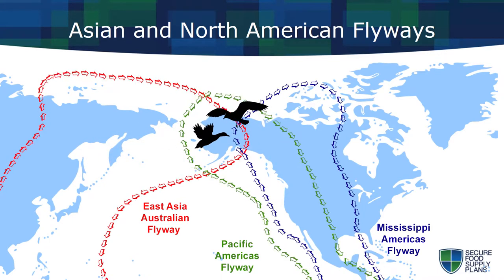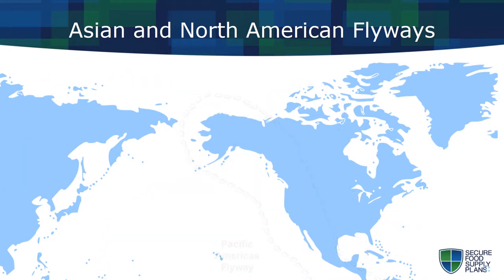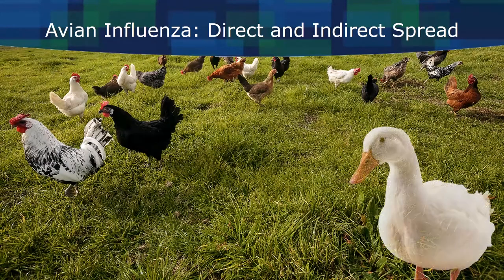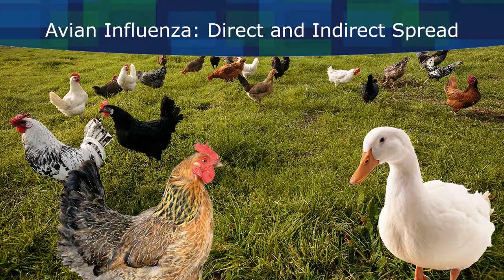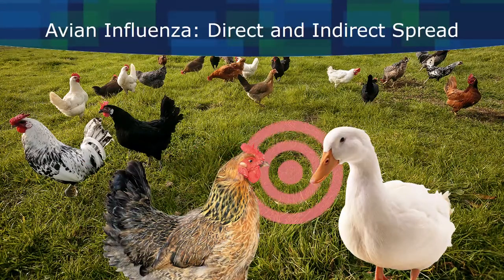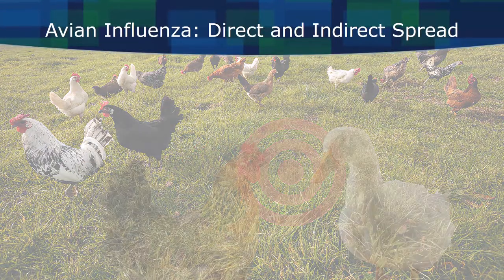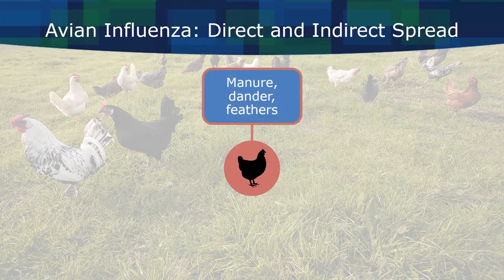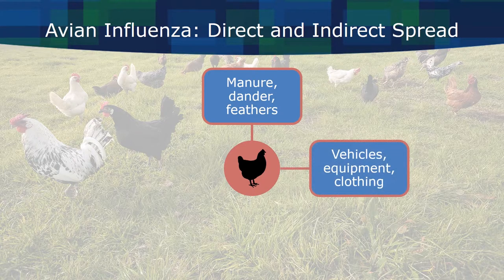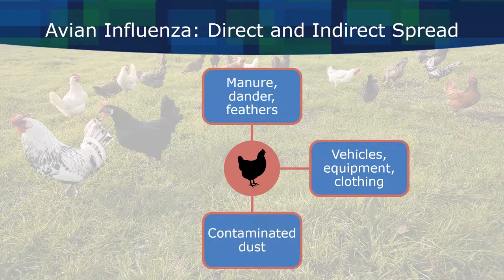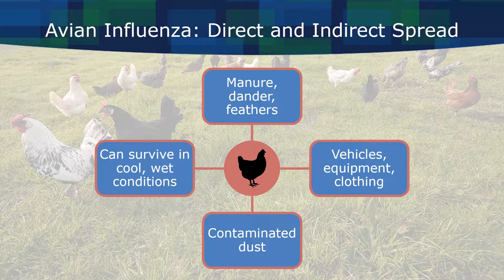This is why preventing contact between wild birds and domestic poultry is so critical in stopping disease spread. Once the virus gets a toehold in a country, a state, or a farm, it can spread with alarming speed. The virus can easily be transmitted directly from one bird to another, or indirectly between flocks by contaminated manure, dander, and feathers, carried on vehicles, equipment, clothing, or by pets or rodents. The virus can also be carried short distances by contaminated dust, and can survive in cool, wet conditions for extended periods — weeks or even months — making disease eradication even more difficult.